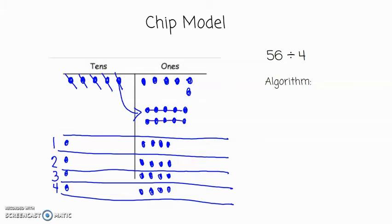So I've distributed all 16 of my ones evenly into 4 groups. Now I will look at each group. Here in each group I have 1 ten and 4 ones, which is 14. My remainder is 0 because I do not have any ones left over.